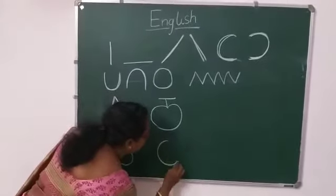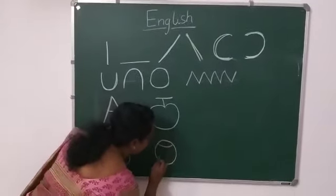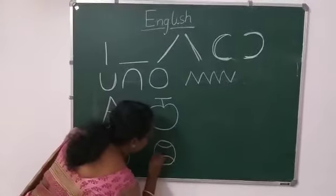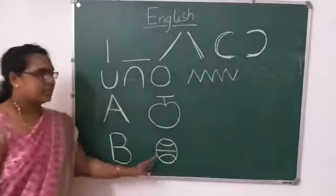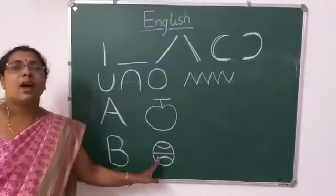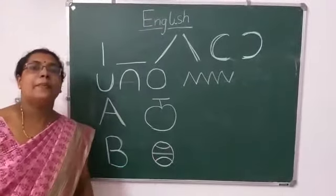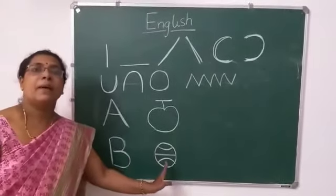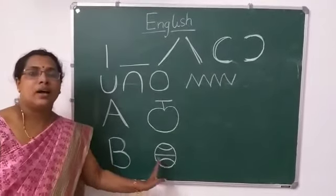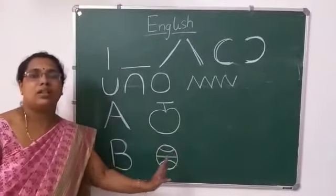So B for ball. I will draw here — ball. What is this? Ball. B says 'b'. B says 'b'. Ball.